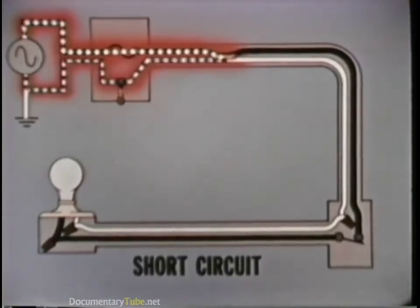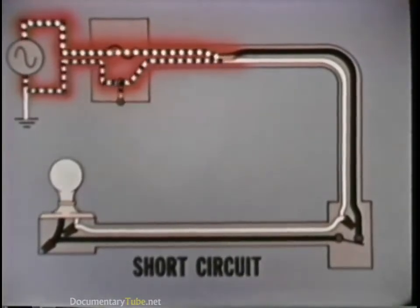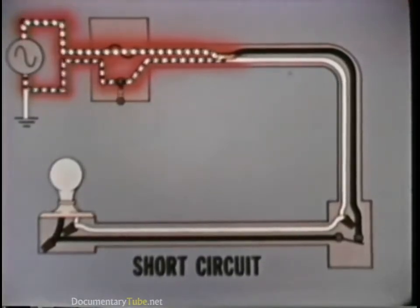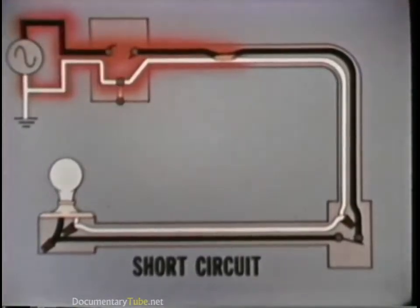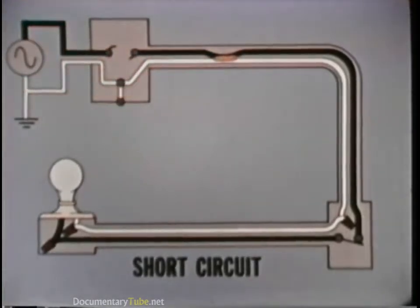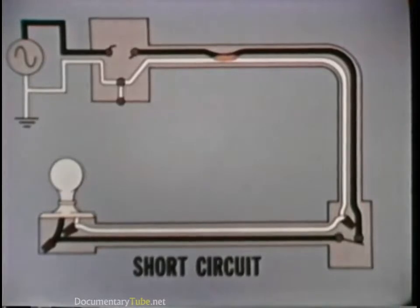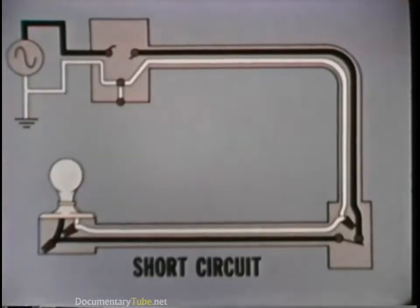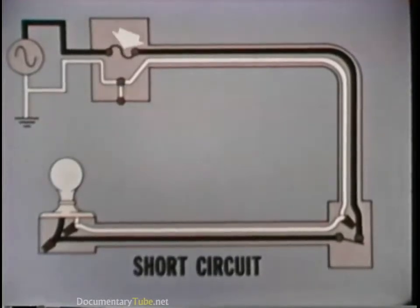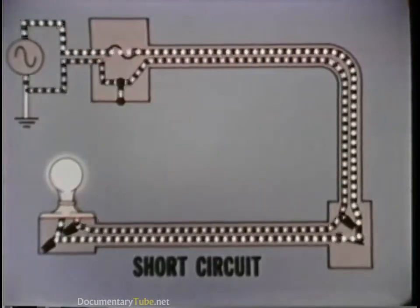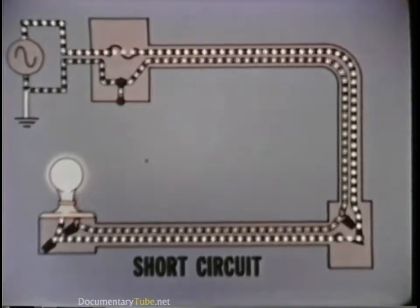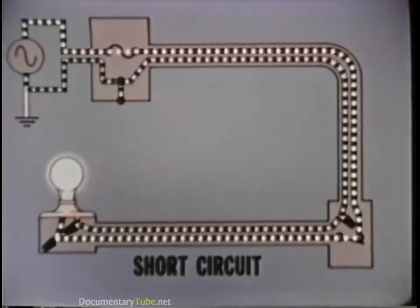However, since the circuit is properly protected, the fuse or circuit breaker reacts to the excessive current and blows or trips, stopping the current flow. To correct the short, the damaged wires must be separated and, in most cases, replaced. Then, replacing the fuse or resetting the circuit breaker restores the circuit to normal operation.